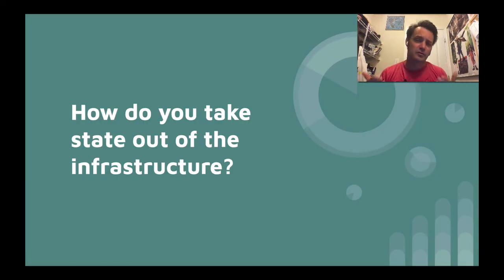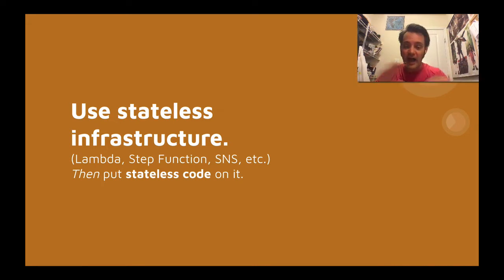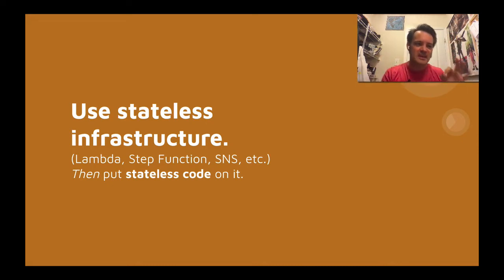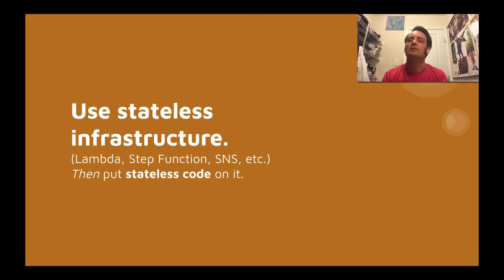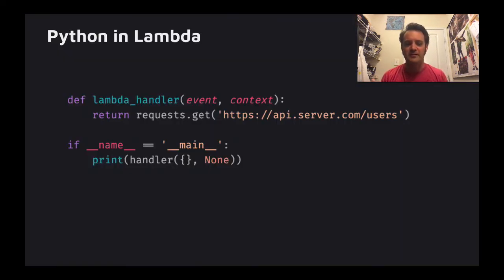Now that you know how to do it with code, how do you do that with infrastructure? Using stateless infrastructure - Lambdas, step functions, SNS, and all the hybrids. You take stateless code and put it on stateless infrastructure. You can still put stateful code on a Lambda that remembers things, exposes a port, and after the 15-minute timer shuts down. But the mindset is stateless code on stateless infrastructure - you get a lot of compounding dividends.